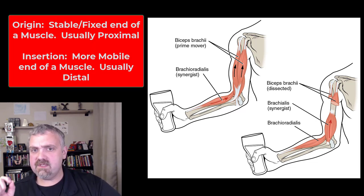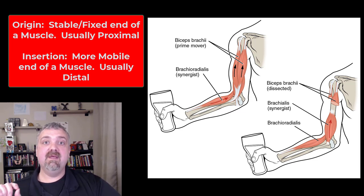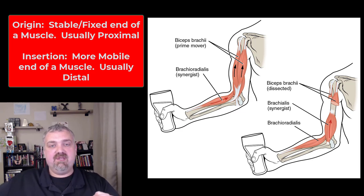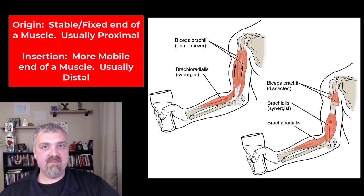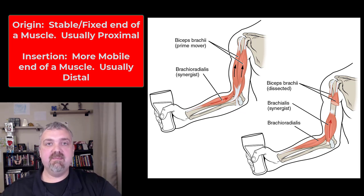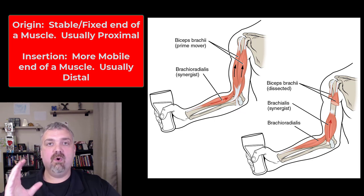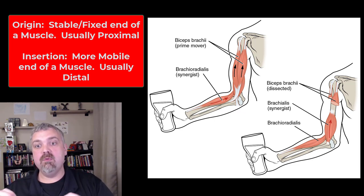So let's start with origin and insertion. Most muscles have two attachment points: an origin and insertion. Here's how I remember them. The origin is usually going to be the most stable end. So looking at the biceps here, when the biceps brachii contracts, the movement is happening at the elbow. That means the origin of the biceps is going to be up in the shoulder — the part that's not moving when that muscle contracts. The insertion is going to be the more mobile end.